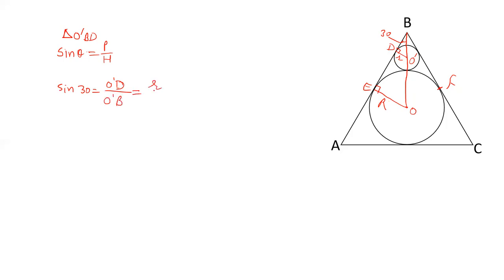O'D is r. And we have to calculate O'B. Sin 30 is 1 by 2. r upon O'B. So O'B is equals to 2r. So value of O'B is 2r.